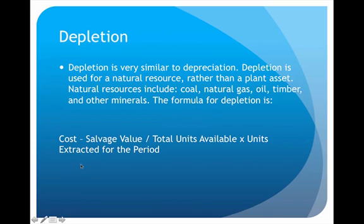The good news is that depletion is very easy to calculate because it's calculated exactly the same way as one of our depreciation methods. Remember we had three methods — one of them was called units of production. The depletion formula is: cost minus salvage value, divided by total units available, times total units extracted for the period. That is the depletion formula, and it's essentially the same as the units of production formula.